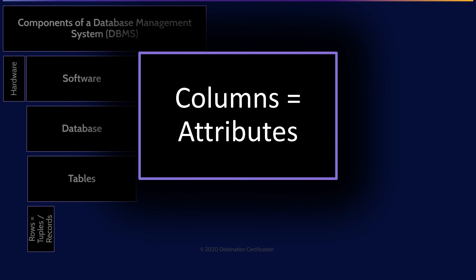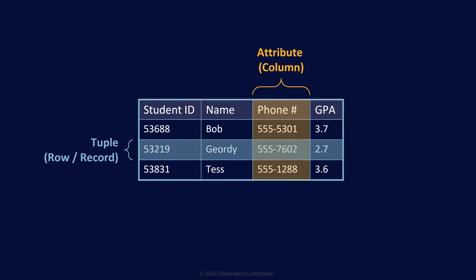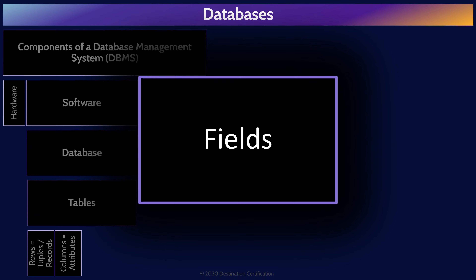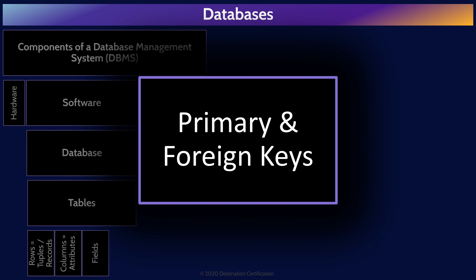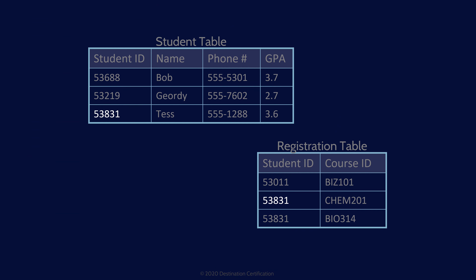Relational databases are made up of one or more tables containing rows and columns of data. You can refer to rows as tuples or records. Columns can also be referred to as attributes. And the intersection of a tuple and an attribute is a field — a cell of data within the table.